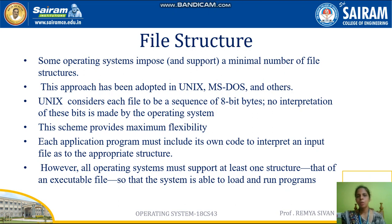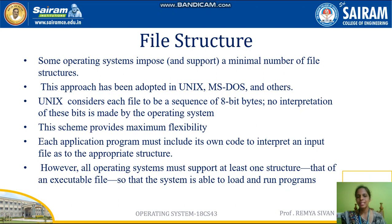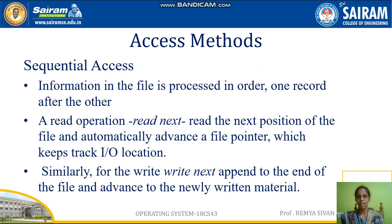Some operating systems impose a minimal number of file structures. This approach has been adopted in UNIX, MS-DOS, and others. UNIX considers each file to be a sequence of eight-bit bytes, and no interpretation of these bits is made by the operating system, which provides maximum flexibility. Each application program must include its own code to interpret an input file with the appropriate structure. However, all operating systems must support at least one structure — that of an executable file — so that the system is able to load and run programs.